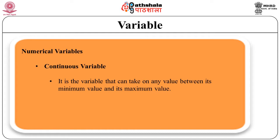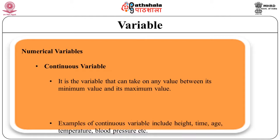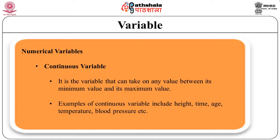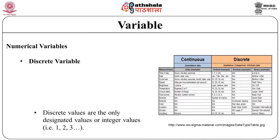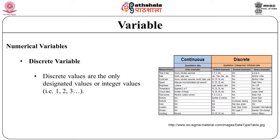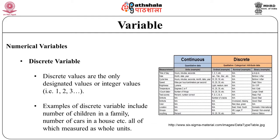In continuous variables, the variable can take on any value between its minimum and maximum value. Examples of continuous variables include height, time, age, temperature, blood pressure etc. On the other hand, discrete variables take only designated integer values like 1, 2, 3. For example, discrete variables include number of children in a family, number of cars in a house, etc. — all of which are measured as whole units.